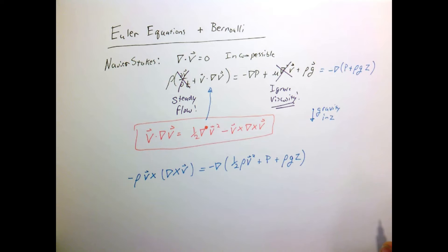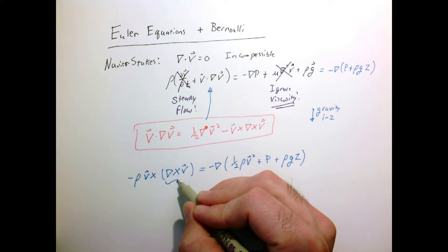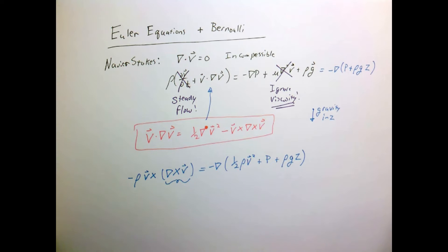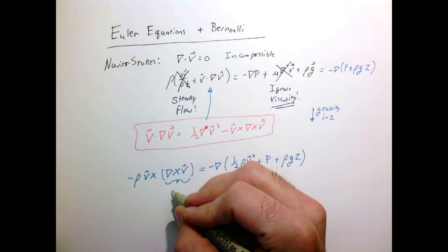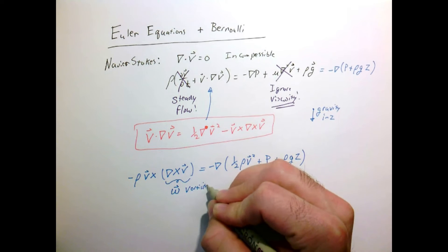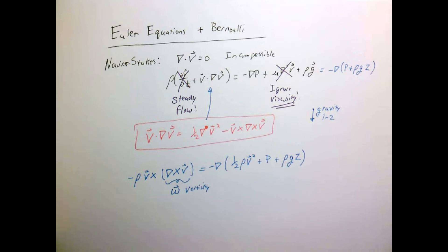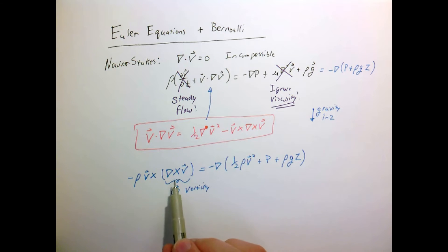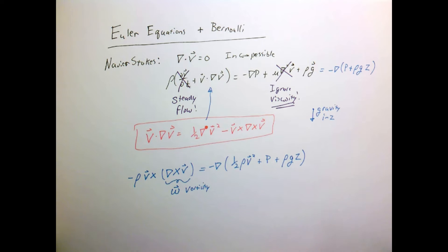This is just a different form of what we already knew. However, there is a special form of this. The cross product of the velocity has a special name in fluid dynamics — we give it the symbol omega, and it's a vector called the vorticity. We'll discuss vorticity much more later on. For now, we'll just use it as a substitution to compact our notation.